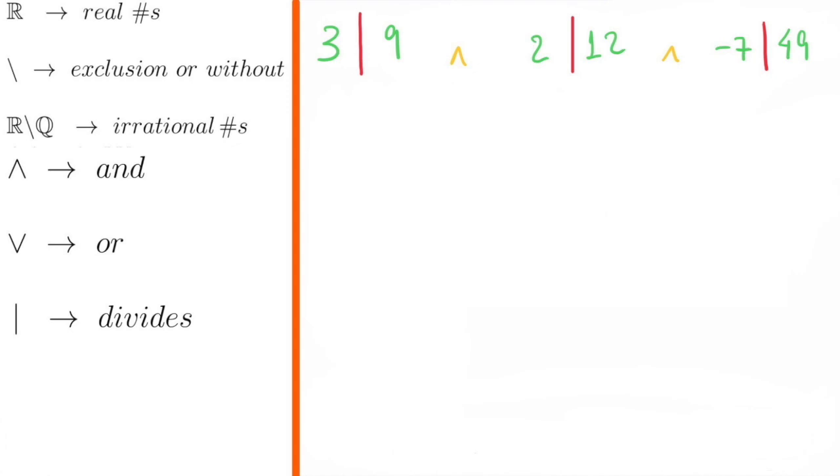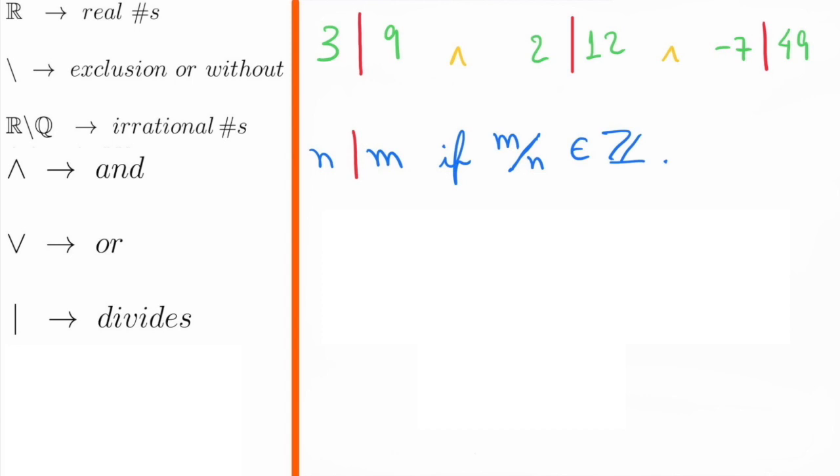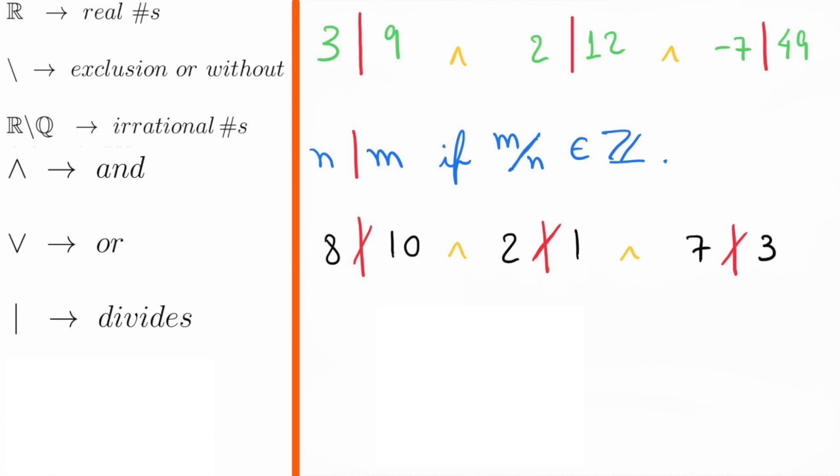For example, 3 divides 9, 2 divides 12, and negative 7 divides 49. The general rule is that if we have two integers, N and M, then N divides M, if M divided by N results in an integer number as well. Counter examples are 8 does not divide 10, 2 does not divide 1, and 7 does not divide 3.